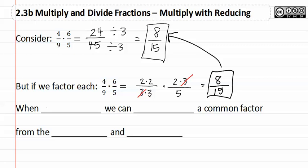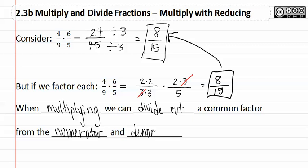So when multiplying, we can divide out a common factor from the numerator of either fraction, and the denominator of either fraction.